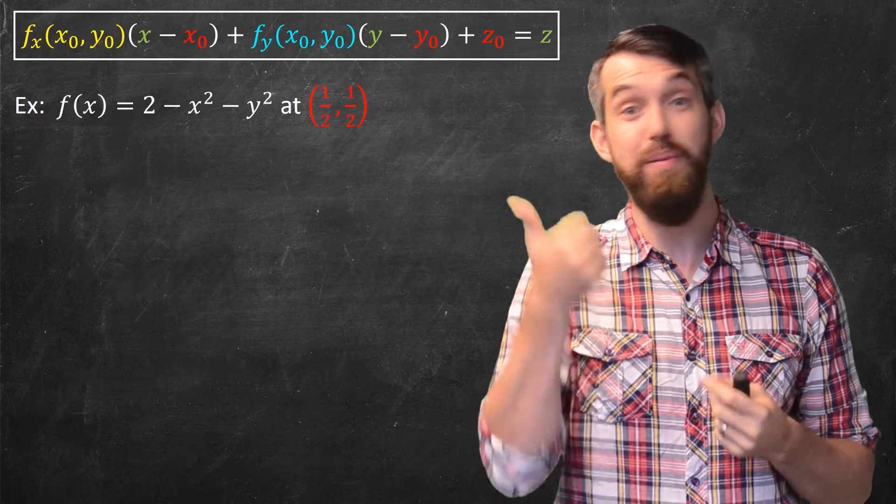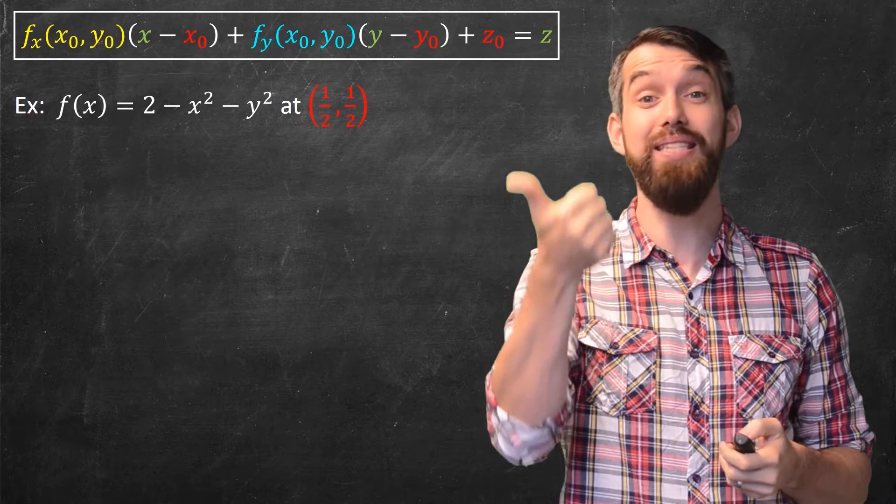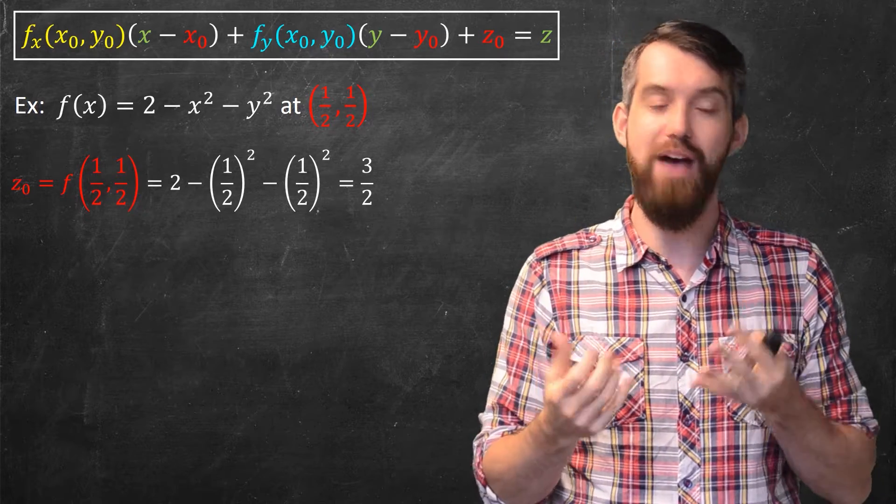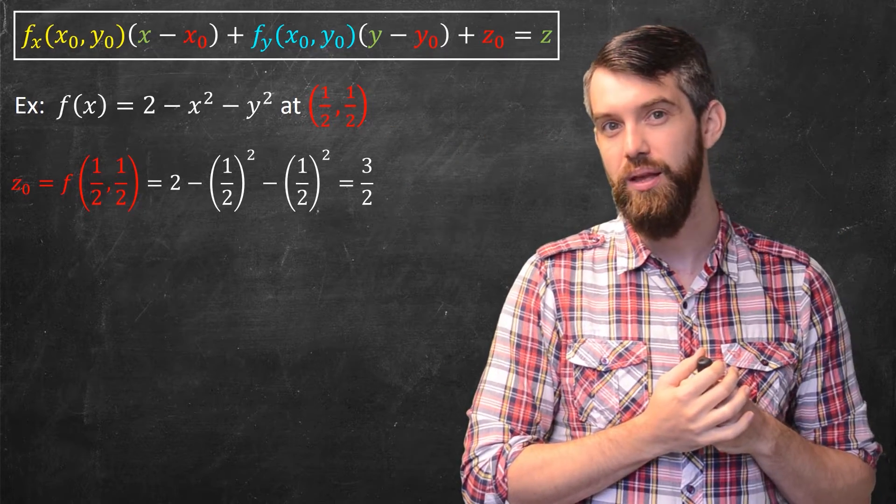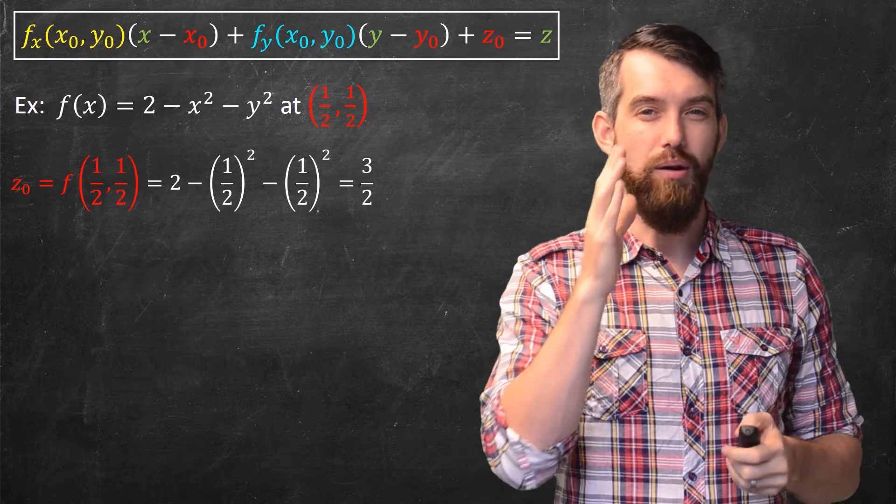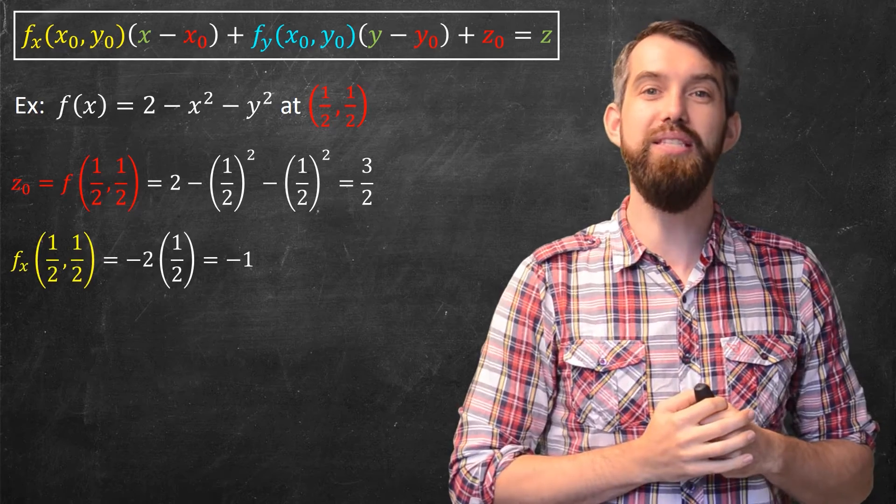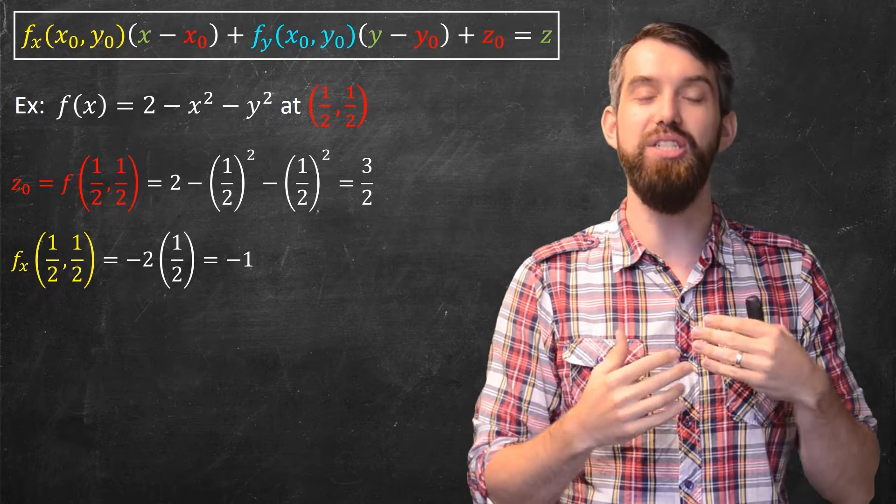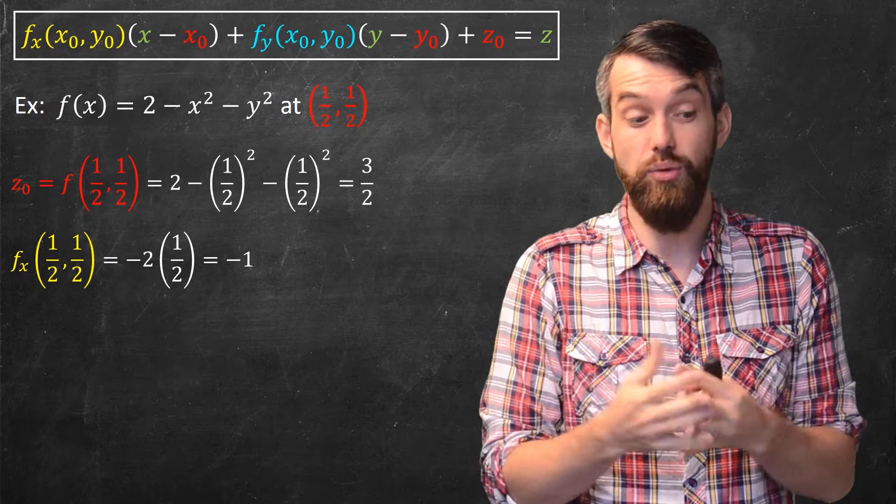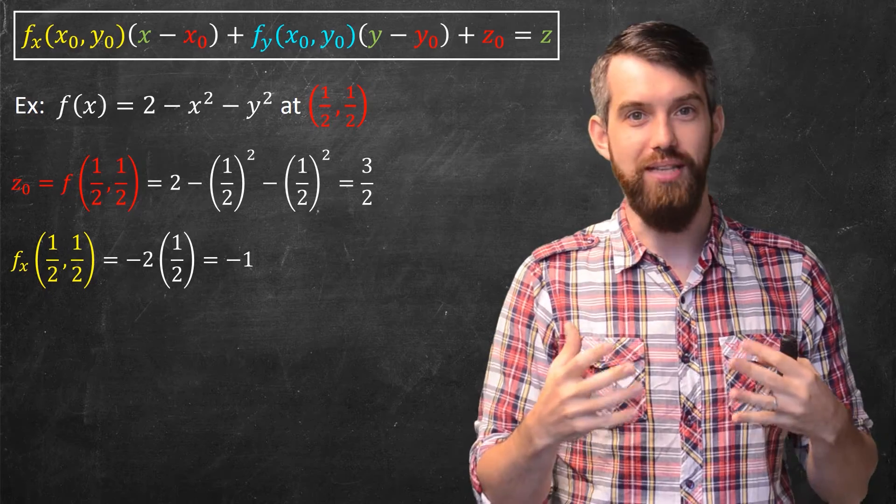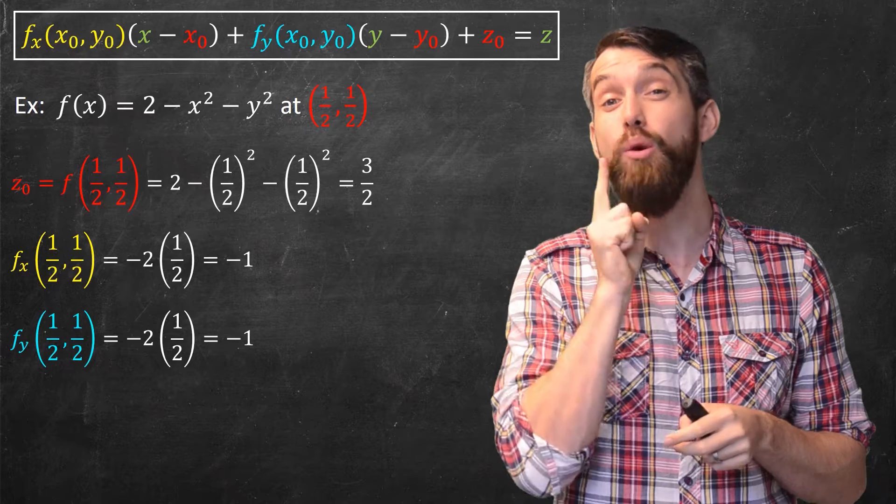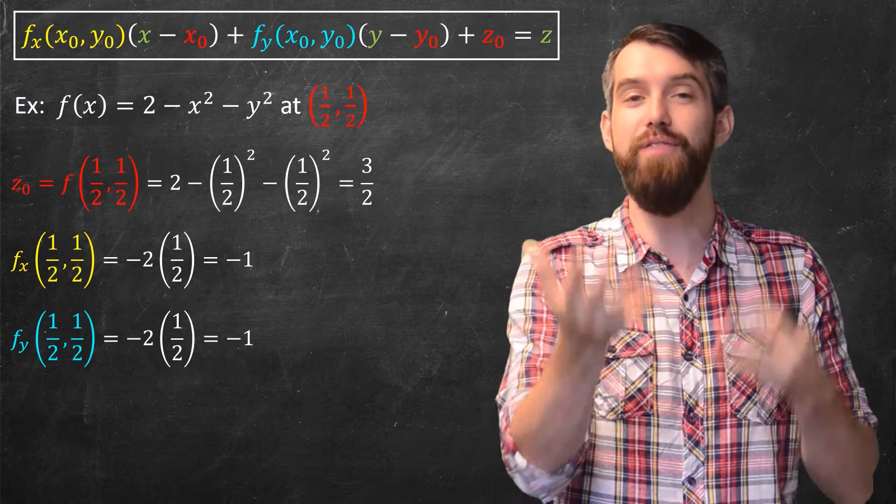So the first thing I'm going to figure out is maybe my z0. So what is the height of the function at this particular point? Well, I just plug it in. What is f of 1 half, 1 half? I plug it in and I get the value 3 halves. Then I want to figure out the partial with respect to x and the partial with respect to y. Well, the partial with respect to x here, this is going to be the same thing as minus 2x, but I evaluated the point x equal to x0. So it's minus 2 times 1 half or minus 1. Likewise, if I take the partial with respect to y here, this is minus 2y, I evaluate at y0 equal to 1 half and I get the value of minus 1.